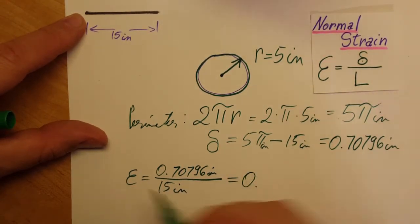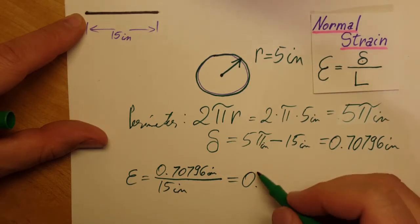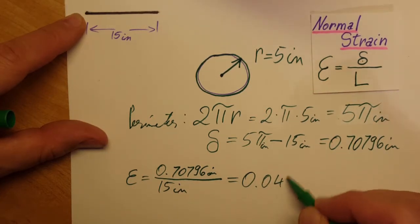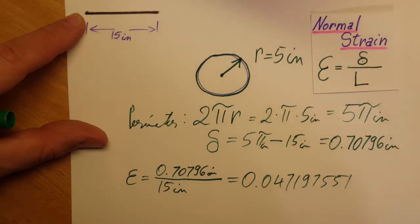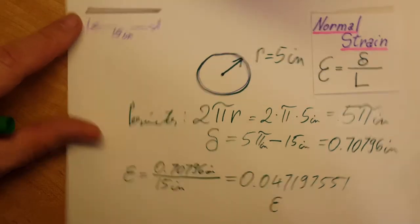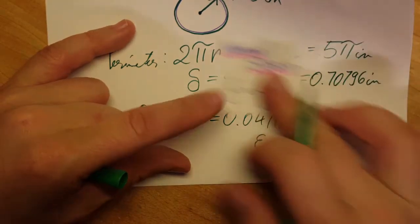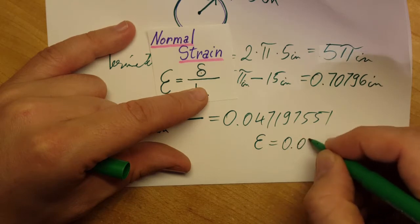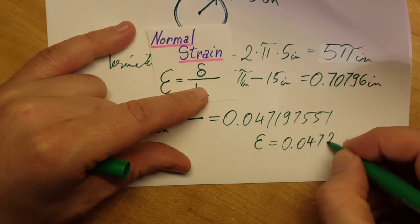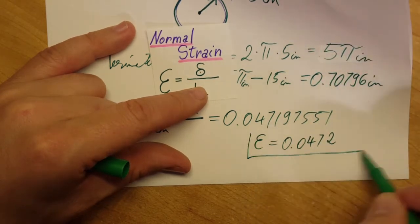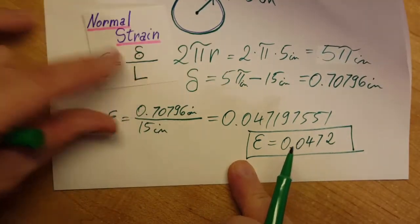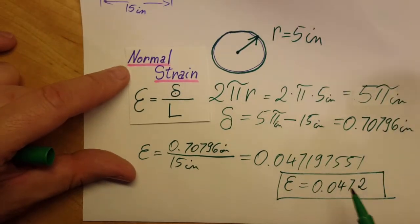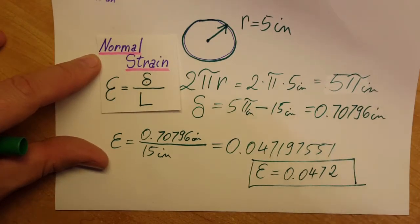With the calculator, we find our normal strain in the rubber which will be 0.047197551. That's all the numbers that the calculator gave, so let's round it up. That's gonna give me epsilon equals, let's see, to 3 sig figs: 0.0472. Epsilon or strain is a ratio, so it does not have any units.